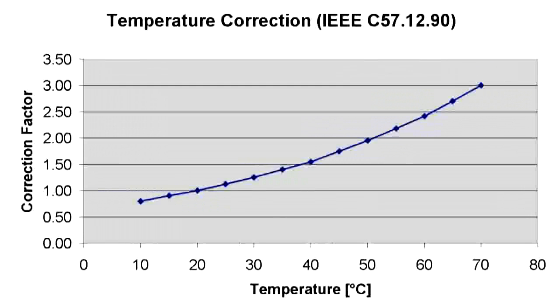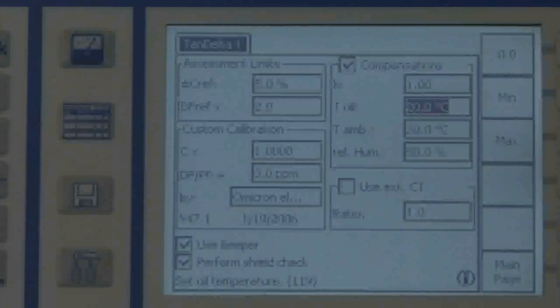Normally, the dissipation factor or the power factor is displayed at a reference temperature of 20 degrees Celsius. Since it is not always possible to measure at this temperature, correction factors for different types of insulation are stored in the unit.